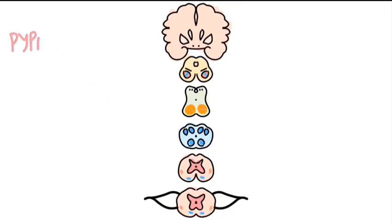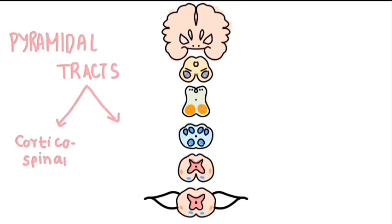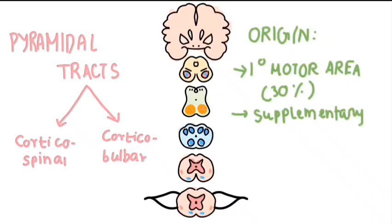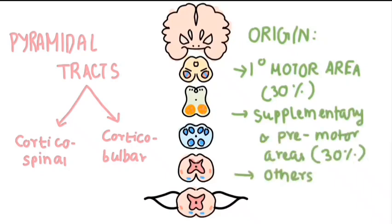One such tract is the pyramidal tract, which we are going to discuss now. The pyramidal tract consists of two sets of fibers: corticospinal and corticobulbar. They differ only in the areas that they terminate in and supply. Both fibers originate from several areas in the cerebral cortex, like the primary motor cortex (about 30%), supplementary motor area and the premotor cortex (30%), and the somatosensory cortex, parietal lobe, and cingulate gyrus supplying the rest.